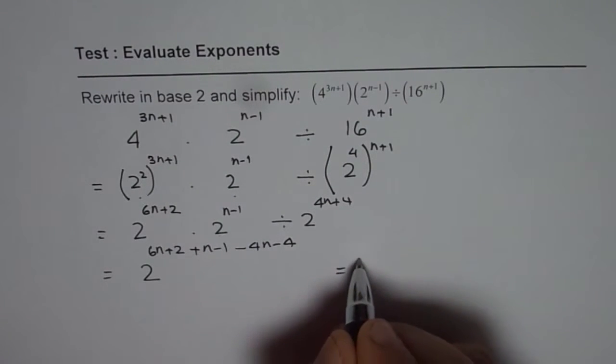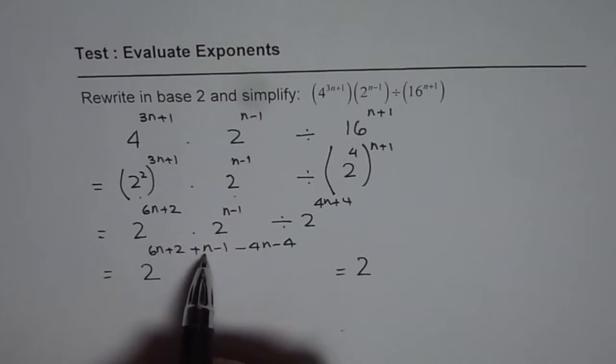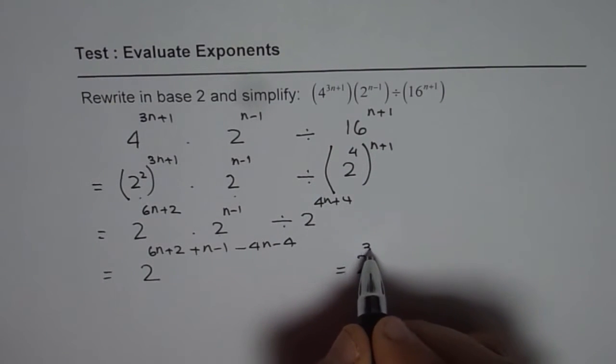So what do you get? We get 2 to the power of, looking at the n terms, 6n plus n is 7n, 7 minus 4 is 3. So we get 3n.